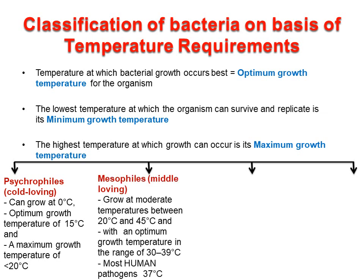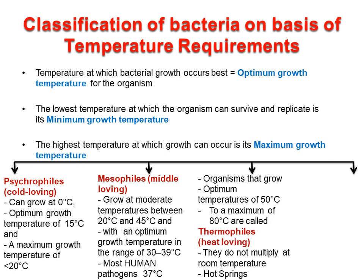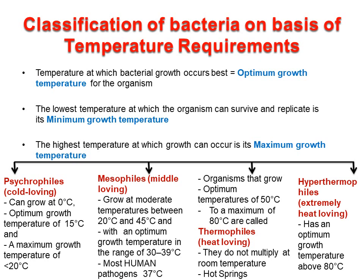Mesophiles are microorganisms which grow at moderate temperatures between 20°C and 45°C, with an optimum growth temperature in the range of 30 to 39°C. Most human pathogens grow best at the normal human body temperature of 37°C. Thermophiles are microorganisms that can grow at optimum temperatures of 50°C to a maximum of 80°C — literally meaning heat loving — they do not multiply at room temperature and are widely distributed in hot springs. Hyperthermophiles literally means extremely heat loving, referring to microorganisms with an optimum growth temperature above 80°C.